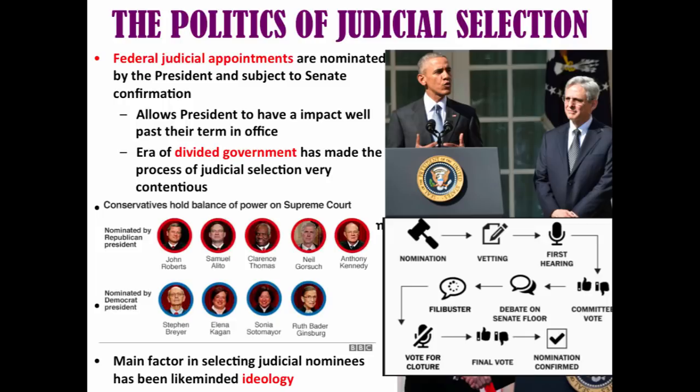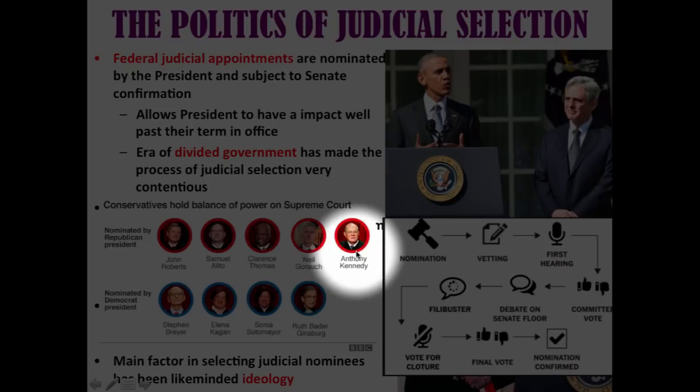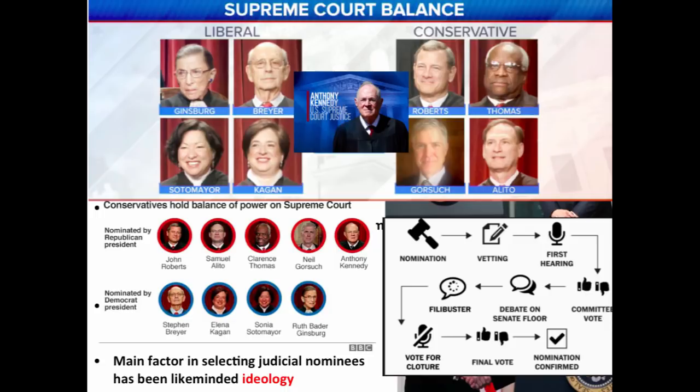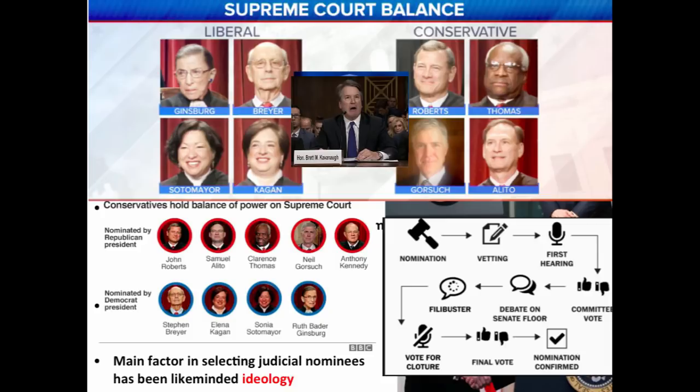Regardless of what the nominating president wants, their nominee can disappoint them and go in a different direction. For instance, Anthony Kennedy, nominated by a Republican president, tended to be the swing vote on the court for many years — sometimes siding with liberals, sometimes with conservatives. When he announced his retirement, it gave Donald Trump an opportunity to name a second judge, having already nominated Neil Gorsuch, and many felt the new nominee would swing the court further to the right.